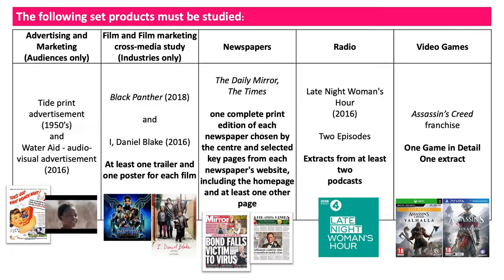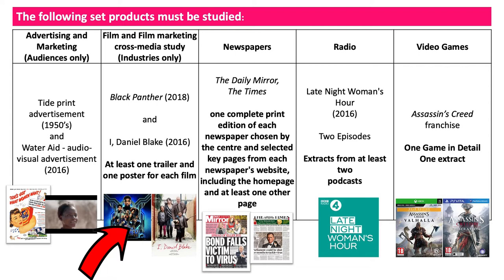So what do you need to know for this section? You need to have studied Tide and Water Aid for advertising and marketing, and this will be audience questions only. You need to have studied Black Panther and I, Daniel Blake for the film and film marketing cross-media study, and this will be industry questions only. You need to have studied at least one trailer and one poster for each, but you will study a lot more for these two films.